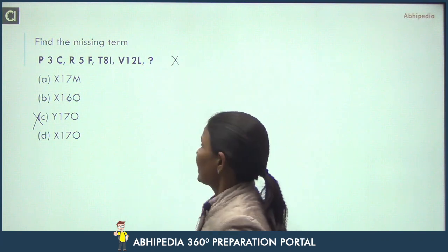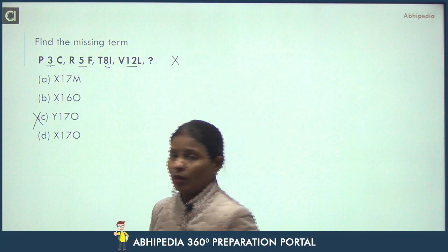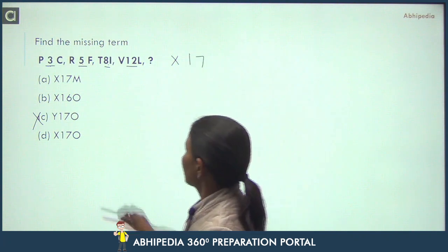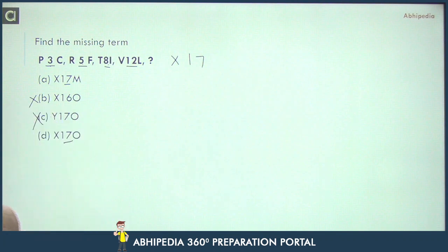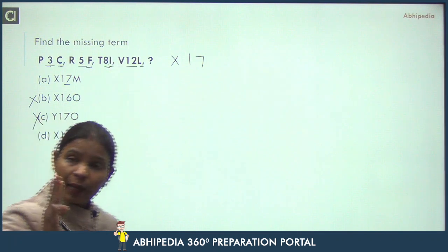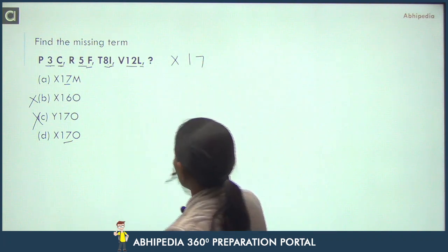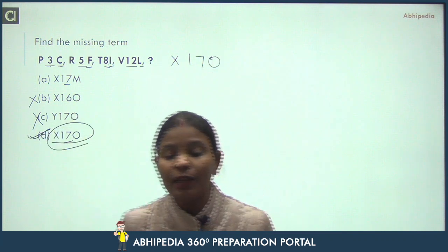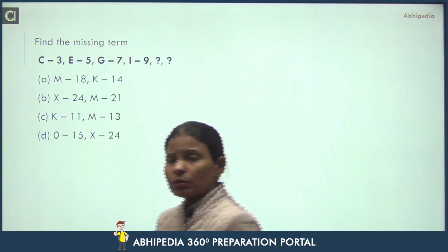Next question. Again, alphanumeric series. You have alphabets and numbers: P3C, R5F, T8I, and then V12L. Let's try. First P is at 16th position, then R is at 18th position, T is at 20th position, V is at 22nd position. That means there's a difference of 2. If we add 2 more to 22, we get 24. At 24th position, we have X. So X will come. That means these three options are eliminated.